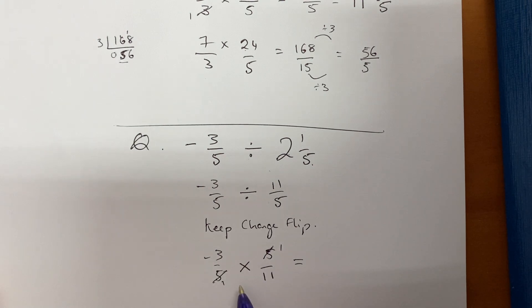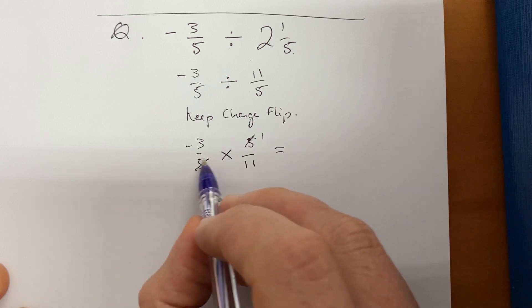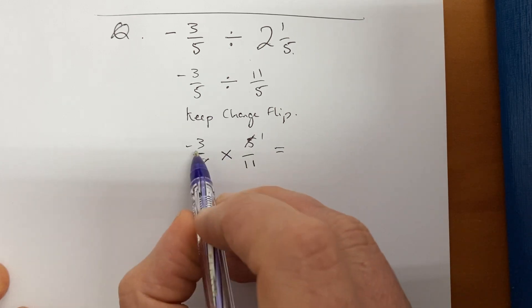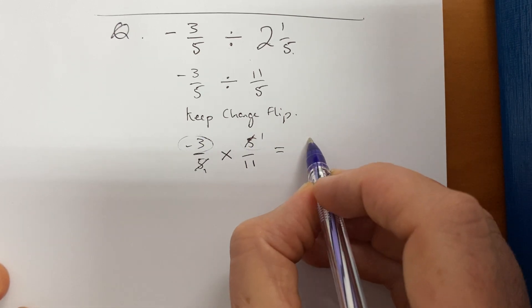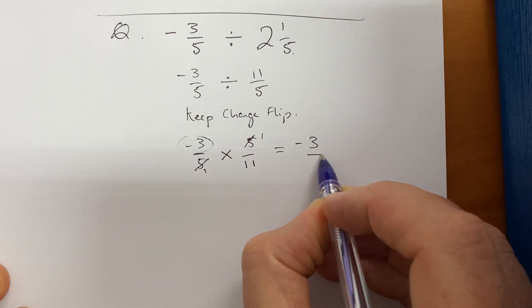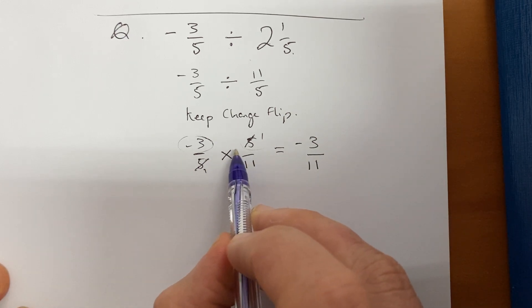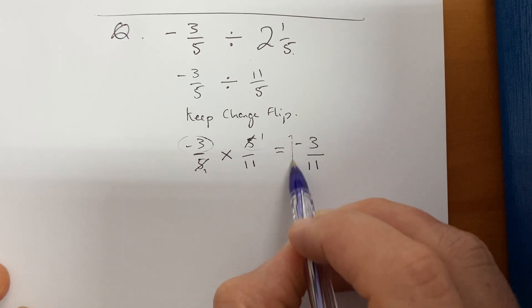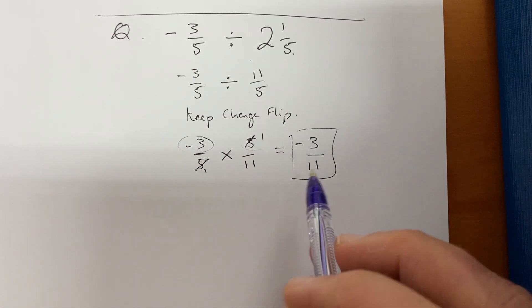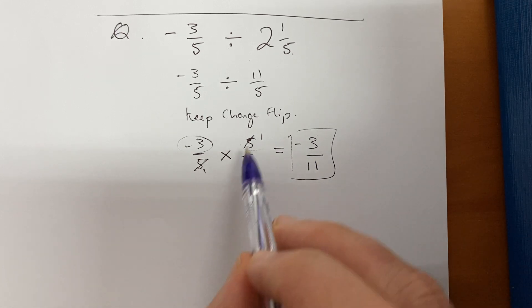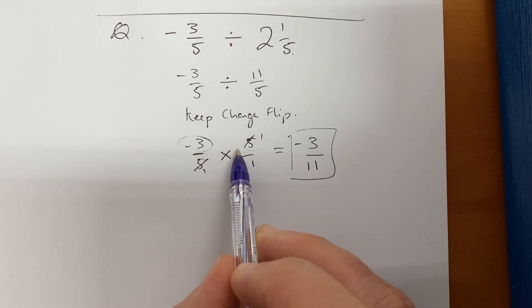All right, so that solves that issue. So now I just multiply. So that's a negative 3 times 1, okay, 3 times 1 is 3, negative times a positive is a negative, 1 times 11 is 11. So if this, this is my answer, negative 3 over 11. The whole fraction is negative. If a bit of the fraction is negative, the whole thing is negative. If either numerator or denominator is negative, so you just call it negative 3 over 11.